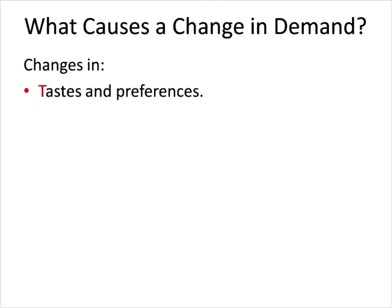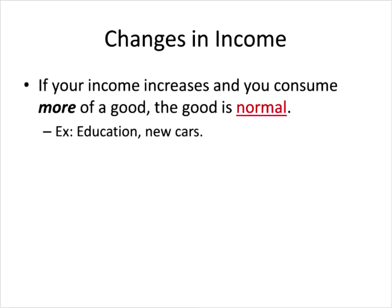There are several factors that cause a change in demand. I have an acronym to help remember them all: the word TINDER, spelled T-I-N-D-E-R. The first factor is taste and preferences — if you just get a hankering for something you didn't have before, you buy more of it at any price. The second factor is changes in income. If you earn less money, you may buy less stuff at every price, but that's not always the case.